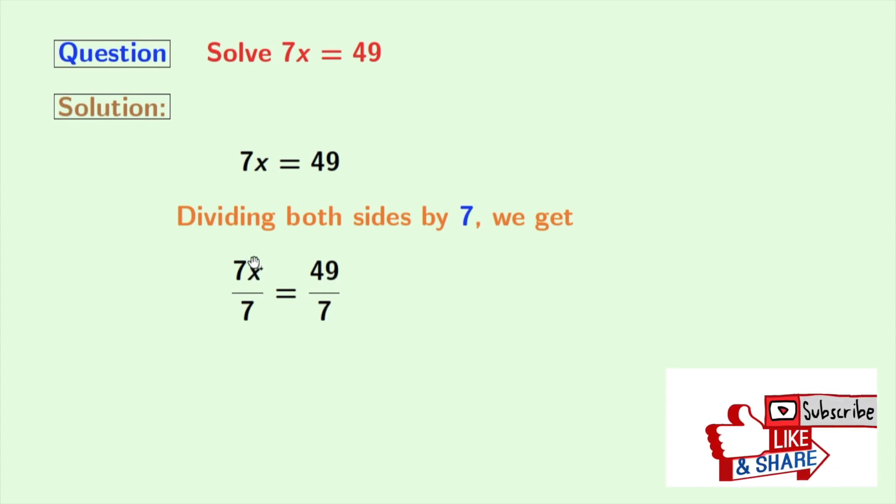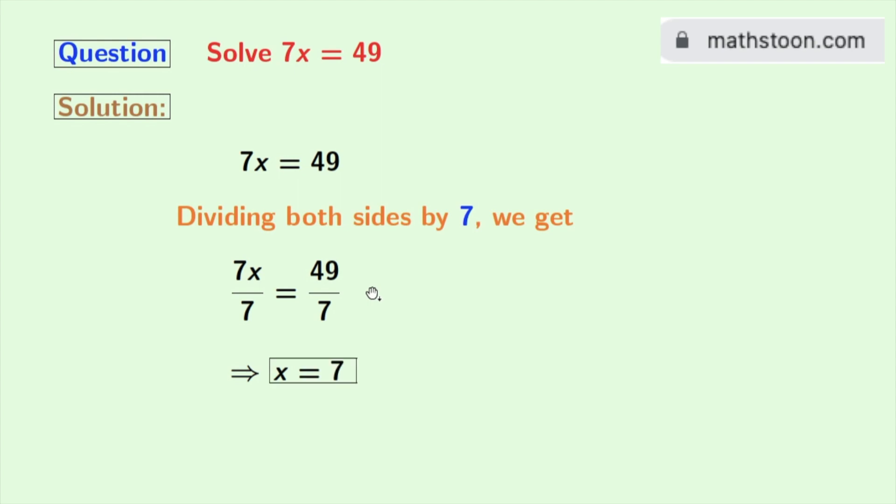Now look that both the numerator and the denominator have 7. So 7 gets cancelled and we are left with x. And in the right hand side, 49 by 7 is 7. So finally, we get x is equal to 7 as our answer.